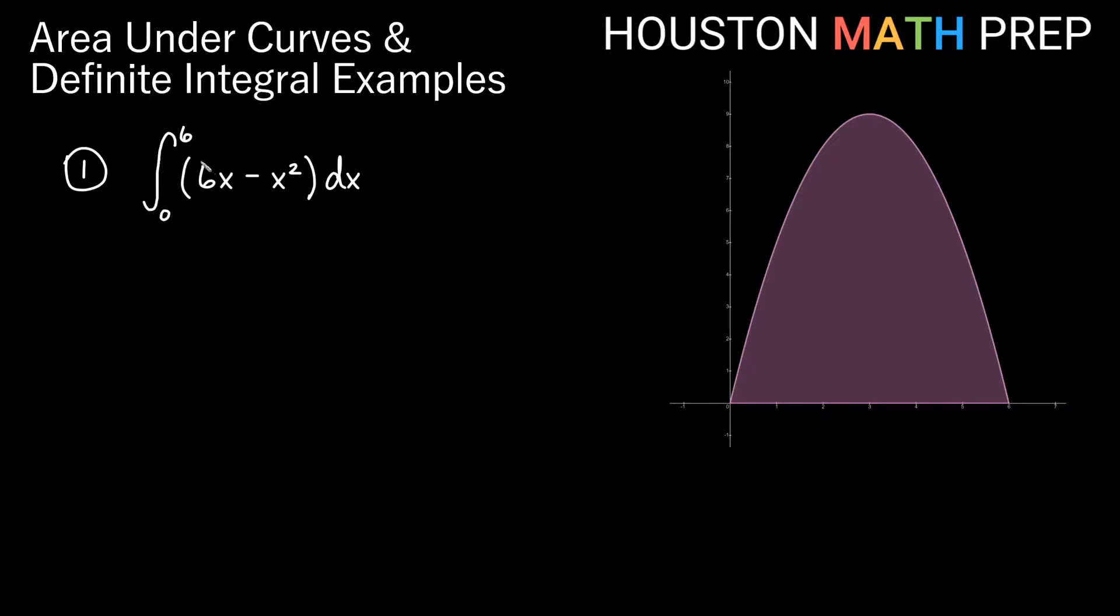For the first one here we have the integral of 6x minus x squared on the interval 0 to 6, so you can see this function would be a parabola that opens down. For this first one here, each of these will be a power rule to do the antiderivative. Here the power will go up by 1, so we'll get x squared. We'll divide by the new power, which would be divide by 2.